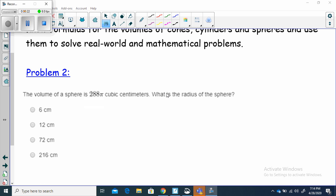The volume of a sphere is 288π cubic centimeters. Volume of a sphere, 288π. What is the radius? So we're looking for the radius. Let's think about this.